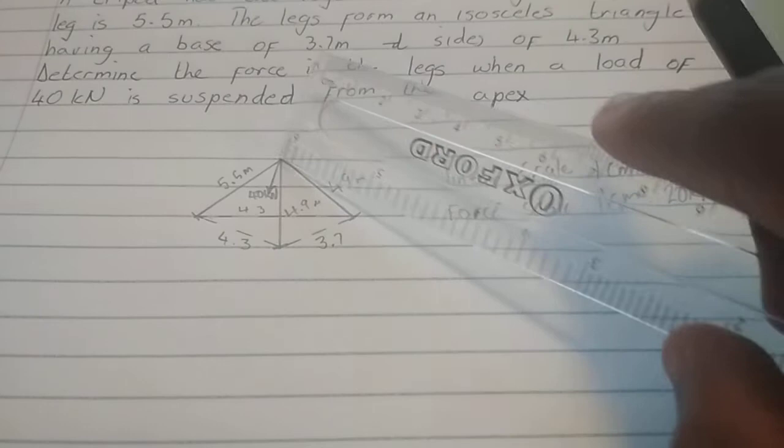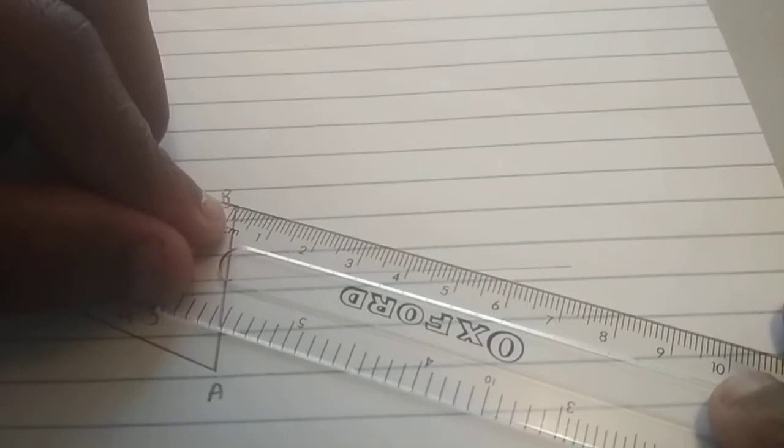Now, we just drew this 4.3, 3.7 line. What we want to draw now is this 4.9. Now, the actual legs. The actual legs on the right side. And they are 4.9 in length. So, we'll put our ruler there. Swing until we hit 4.9. Bam.